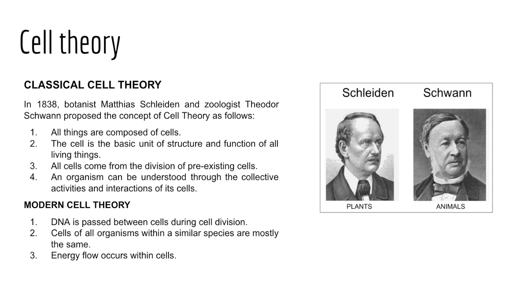However, Schleiden and Schwann used their own work in the study of tissues, comparing plant and animal tissues, and using advancements in the microscope to make a unified classical cell theory that stated four things. First, all things are composed of cells. Second, the cell is the basic unit of structure and function of all living things. Third, all cells come from the division of pre-existing cells. And lastly, an organism can be understood through the collective activities and interactions of its various cells.